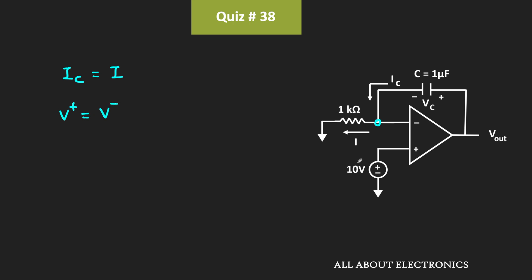The voltage at the non-inverting terminal is 10V. Therefore, the same voltage appears at the inverting terminal, so V- is also equal to 10V.